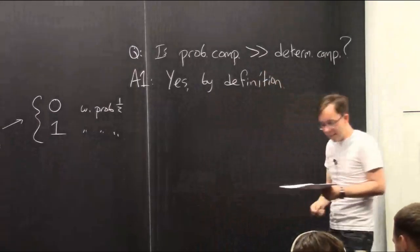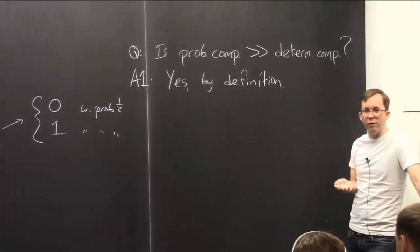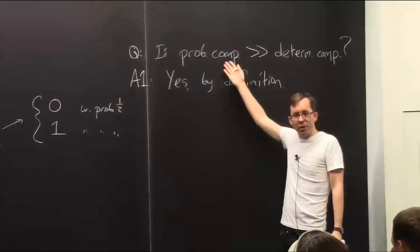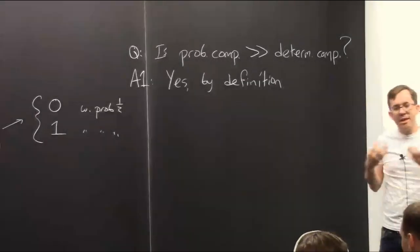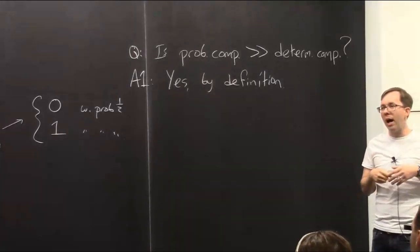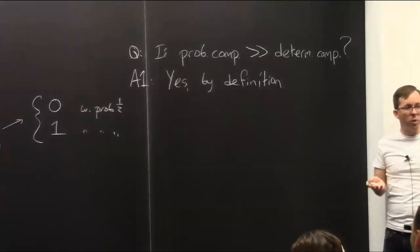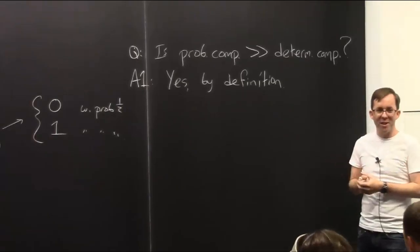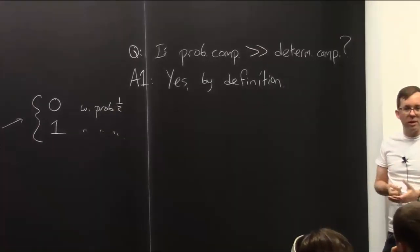It depends on what the task is. Suppose I propose a computational task of outputting five truly random bits. By definition, a probabilistic computer can do this, and by definition a deterministic computer cannot. If the task is to simulate something random, like do a Monte Carlo simulation, or choose a random 1024-bit prime — a task you always need whenever you're doing encryption — a probabilistic computer can do it, and a deterministic computer cannot.